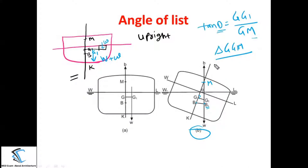In upcoming classes, there will be cargo added to the ship and cargo removed at different locations. We will calculate how GG1 and GM change, substitute all values into the formula, and find theta — the angle of list.